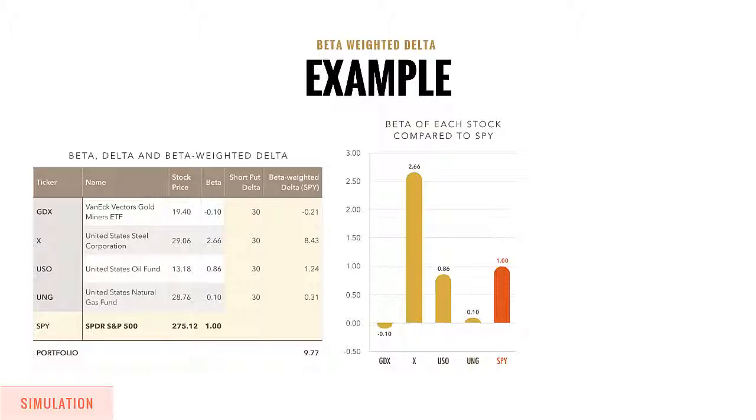GDX has a negative beta to the SPY, which means it's not correlated. The GDX might go up even when the S&P goes down, and it might go down when the S&P goes up. US Steel has a 2.66 beta compared to the SPY.